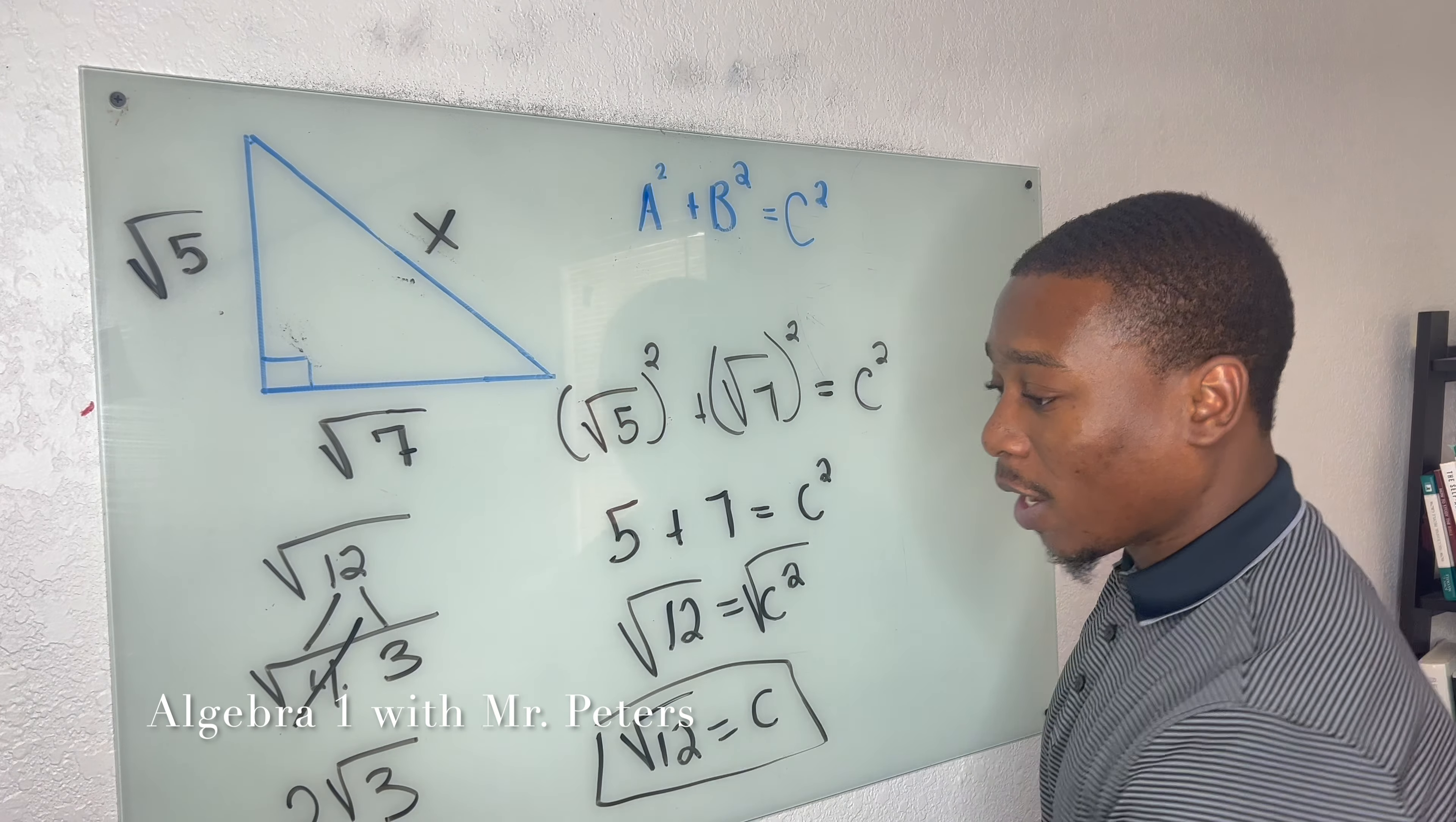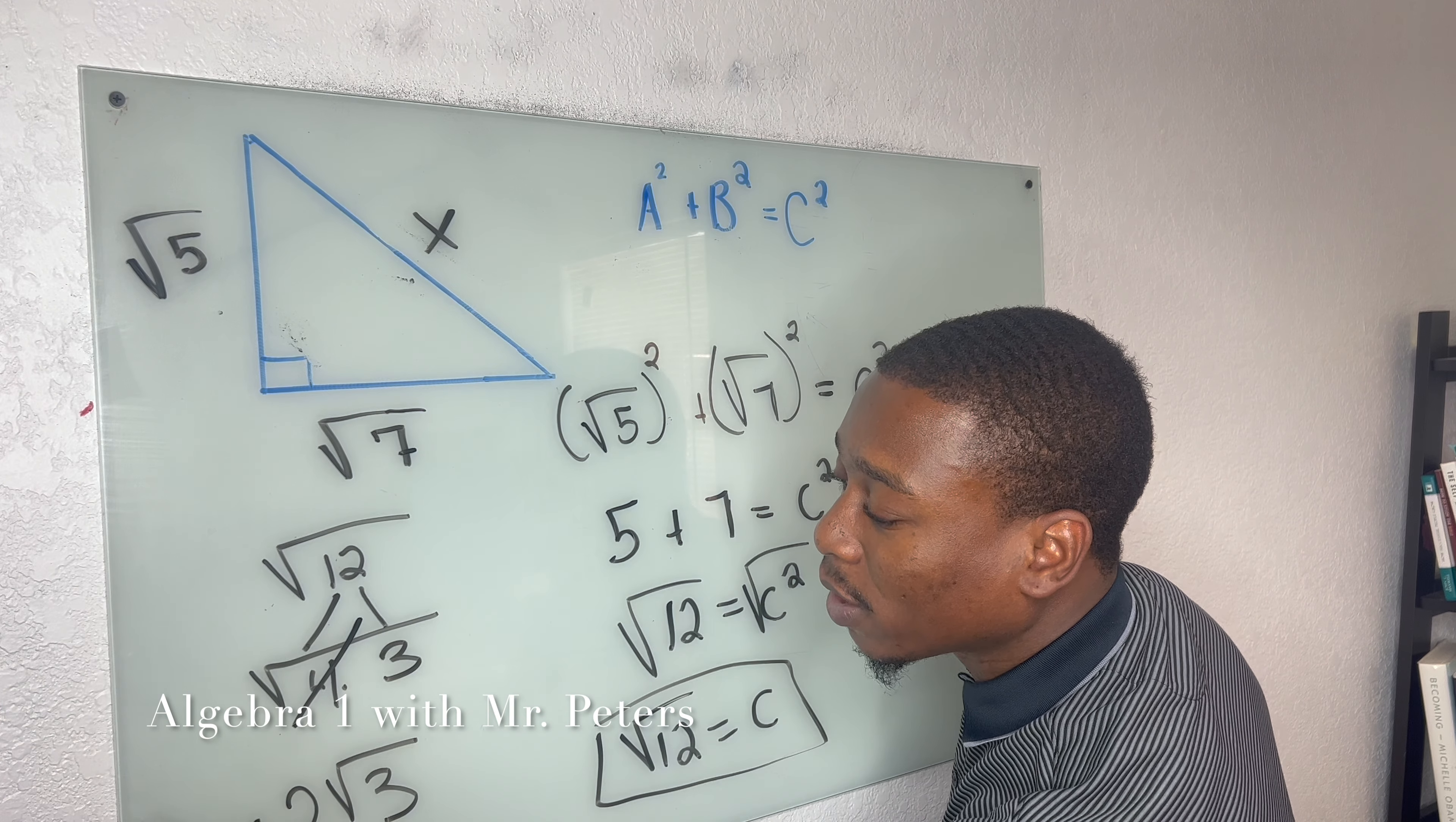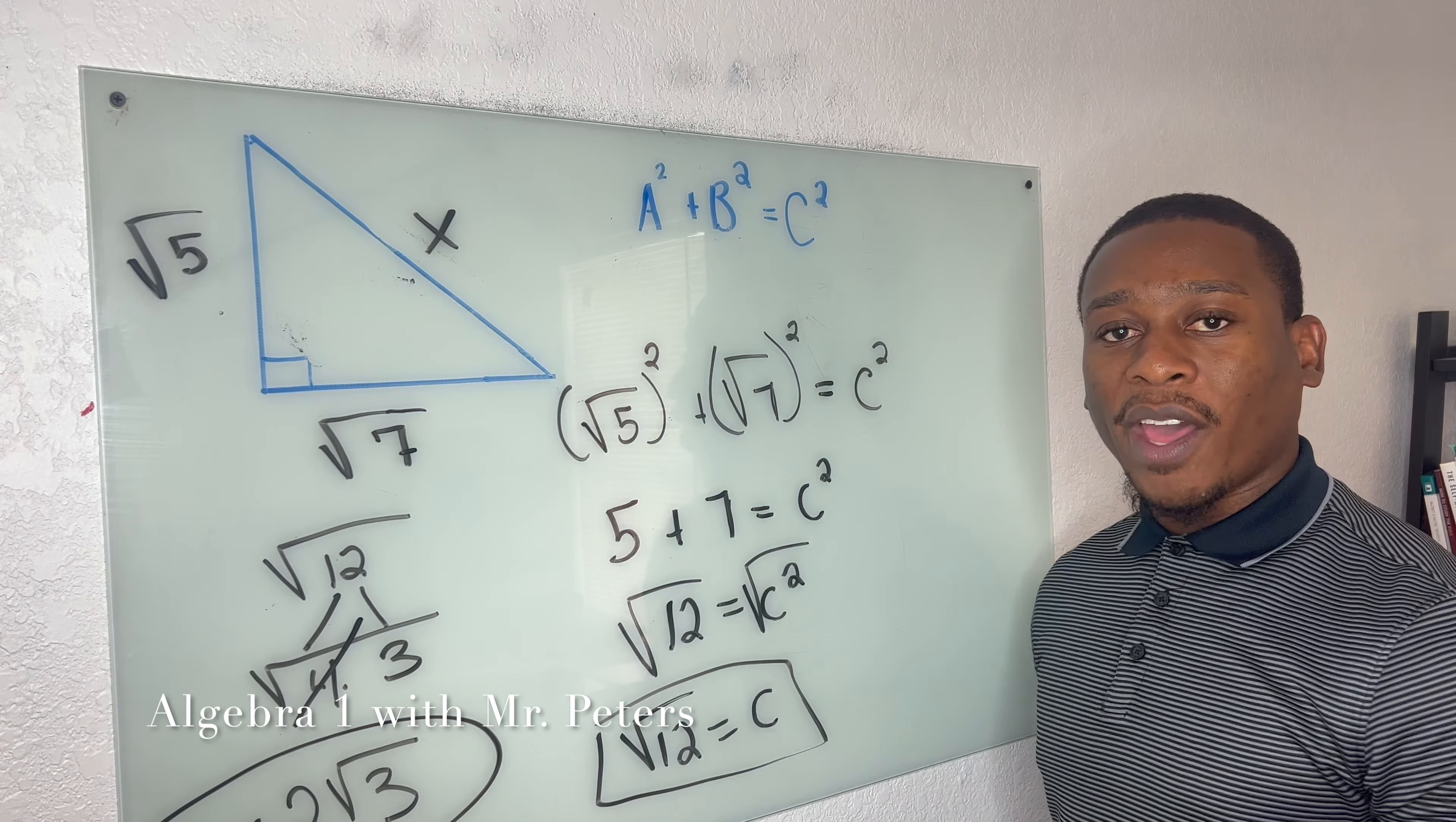So for this answer, C is equal to plus or minus 2 radical 3.